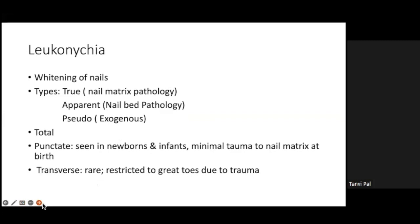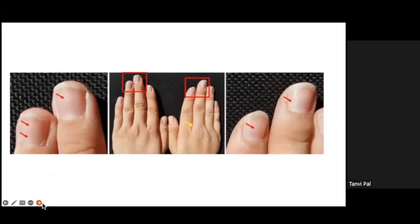There is also an entity called transverse leukonychia, which is quite rare and restricted to the great toes due to trauma. In the picture, you can see punctate leukonychia marked by the red arrows — very commonly seen in the growing age group. Nothing needs to be done.